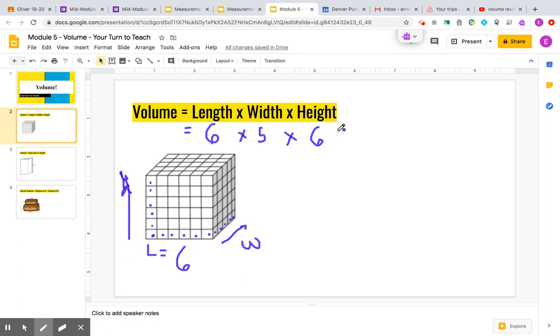And now let's multiply to find that overall volume or how much space this rectangular prism takes up. So 6 times 5 is 30. When I multiply by 6 again, I'm going to get 180 cubic centimeters.